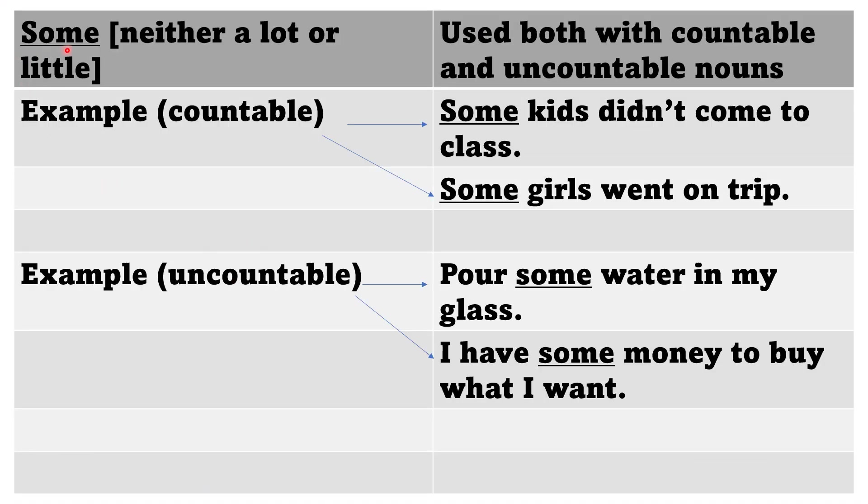We have some. Some means neither a lot or little. Some is used both with countable and uncountable nouns. Example of countable nouns: some kids didn't come to class, and some girls went on trip. The uncountable part: pour some water in my glass. I have some money to buy what I want.